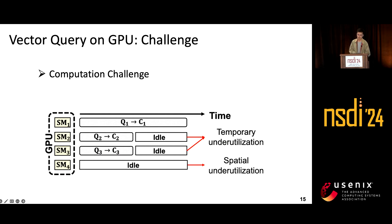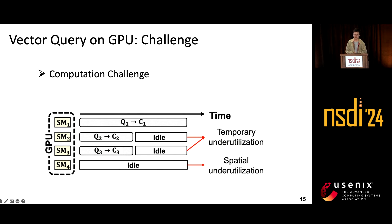If transmission and computation are based on groups, each group's computation becomes a GPU kernel. However, this kernel may lead to low utilization of GPU streaming multiprocessors. First, when building an index, the number of vectors in different clusters varies, so in the GPU kernel for vector search there might be long-tail block computation that defers the entire kernel execution. Second, the computation of each group might not fully utilize the GPU SMs — for example, if computation only includes three blocks but we have four SMs, then one SM will remain idle.